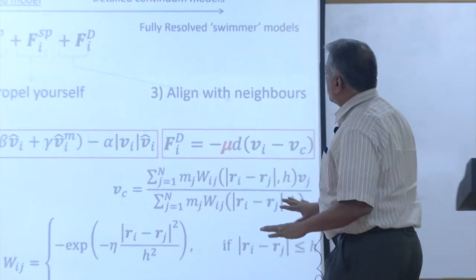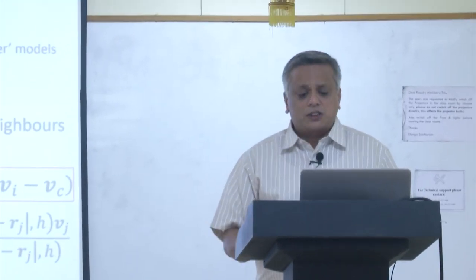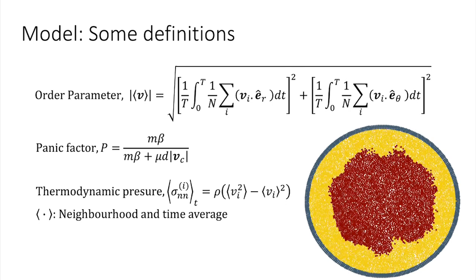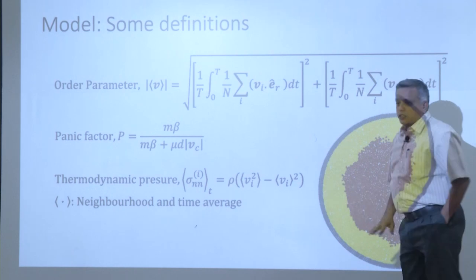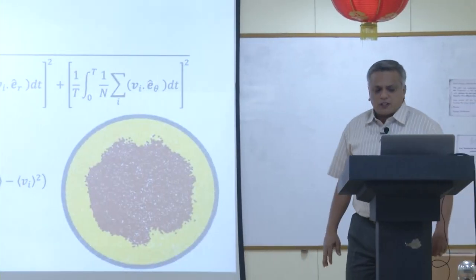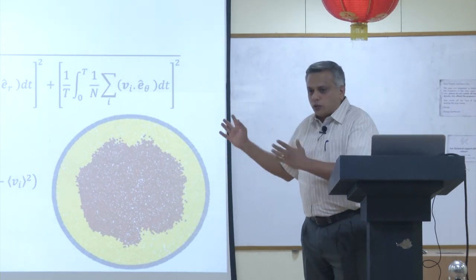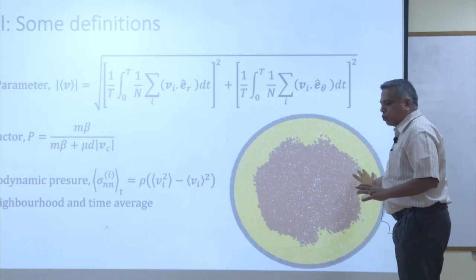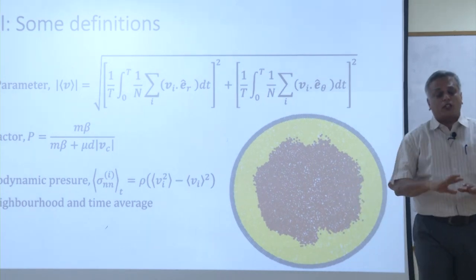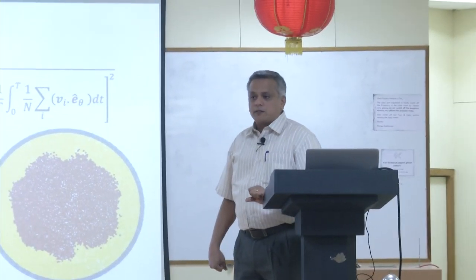We define an order parameter based on the average radial speed and the average azimuthal speed — one could also use angular velocity as a scalar order parameter, but that is best defined for a circular enclosure. Our definition is slightly more general so results can extend beyond circular enclosures.